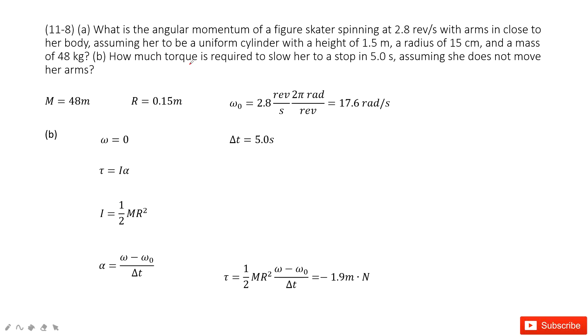The second one, we need to find the torque if we require to slow her to stop in 5 seconds. So that means in this case, the final angular velocity is 0 because she stops, right? And time taken is 5 seconds.